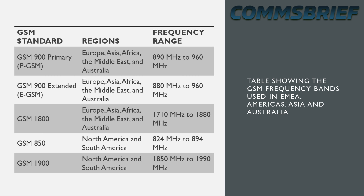There's also another 900 MHz band which is the extended GSM band. In GSM, they later introduced some additional frequencies to accommodate more channels. This extended band ranges from 880 MHz to 960 MHz. Then the GSM 1800 MHz band ranges from 1710 MHz to 1880 MHz. And on the American side, both North and South America, the 850 band is from 824 MHz to 894 MHz.